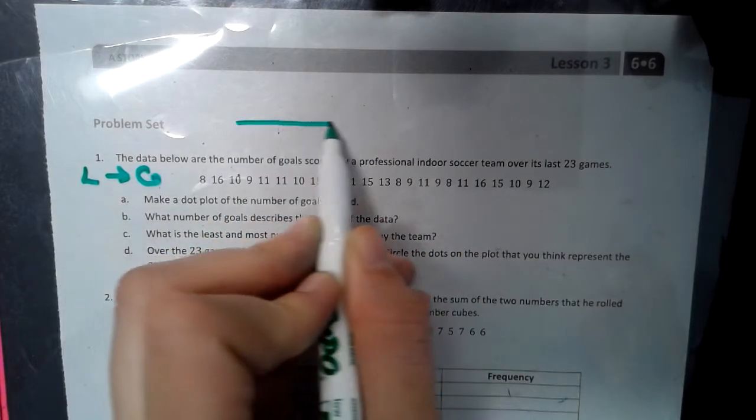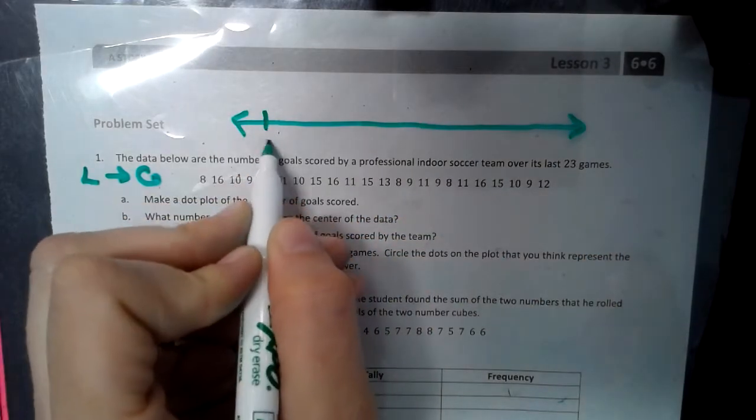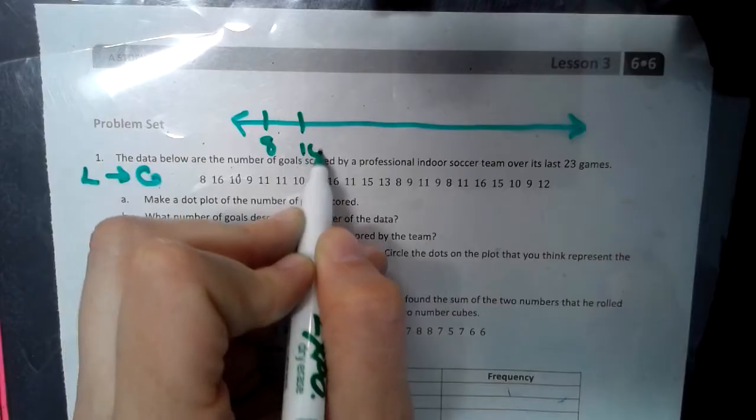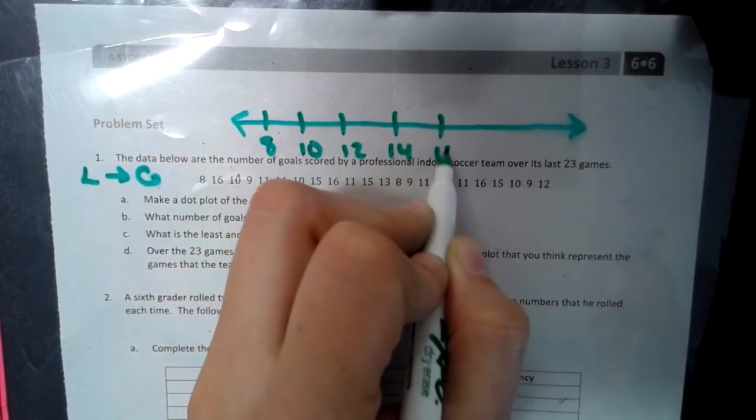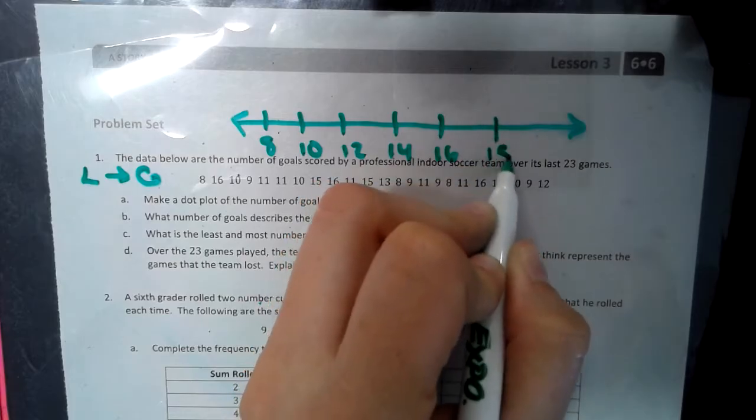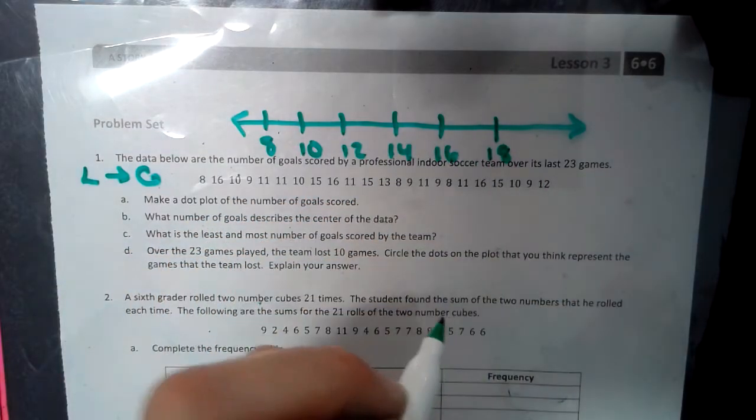So, I'm going to make a line. And on that line, I'm going to put 8, 10, 12, 14, 16, 18. And the in-between spaces will represent the odds.